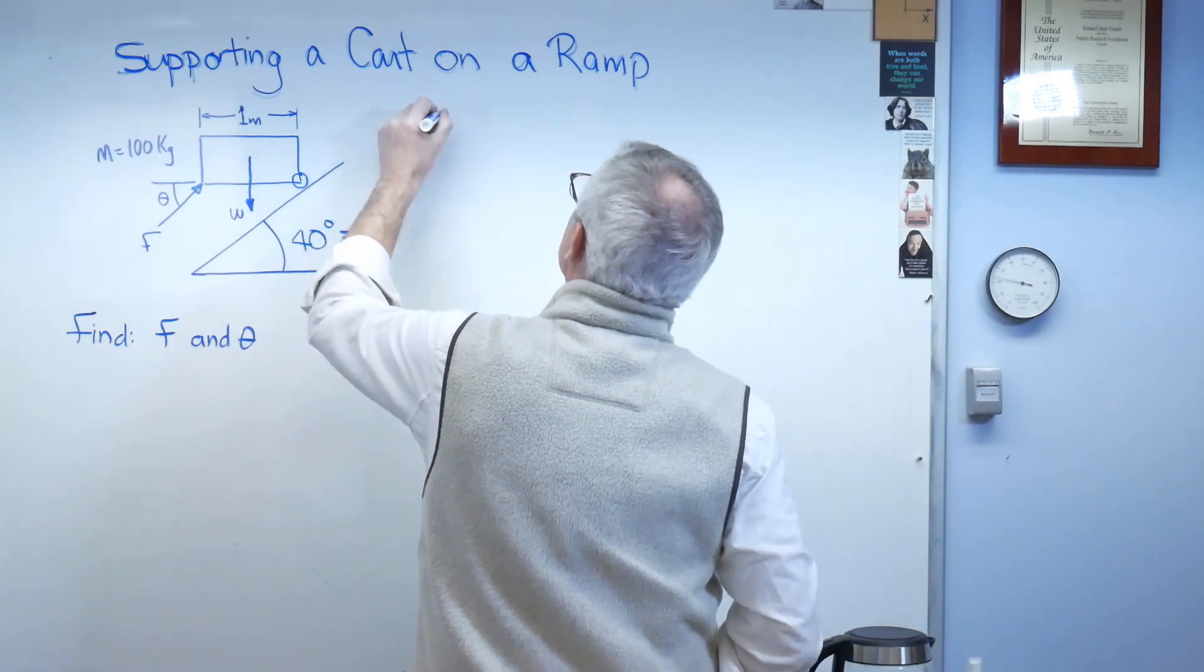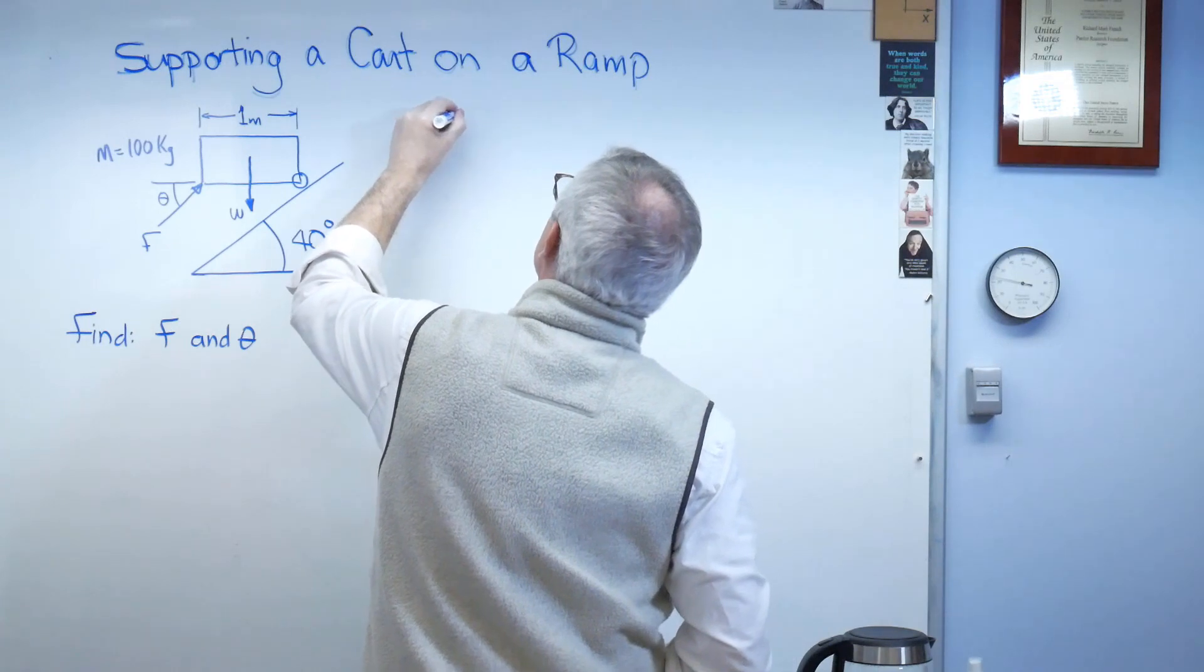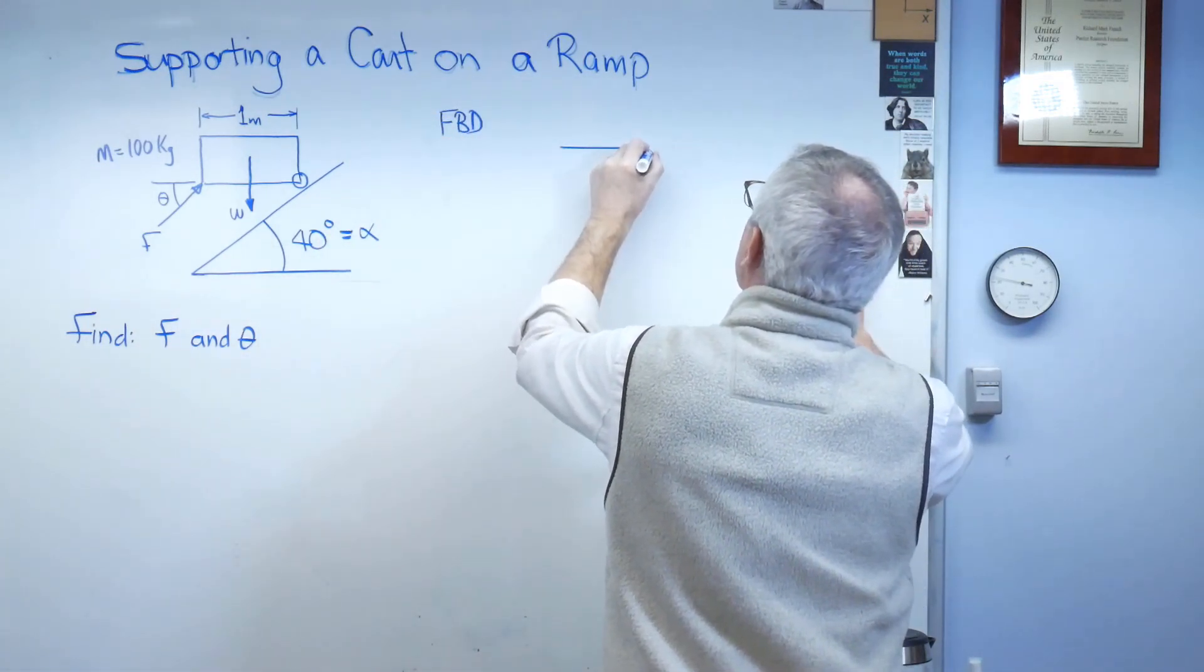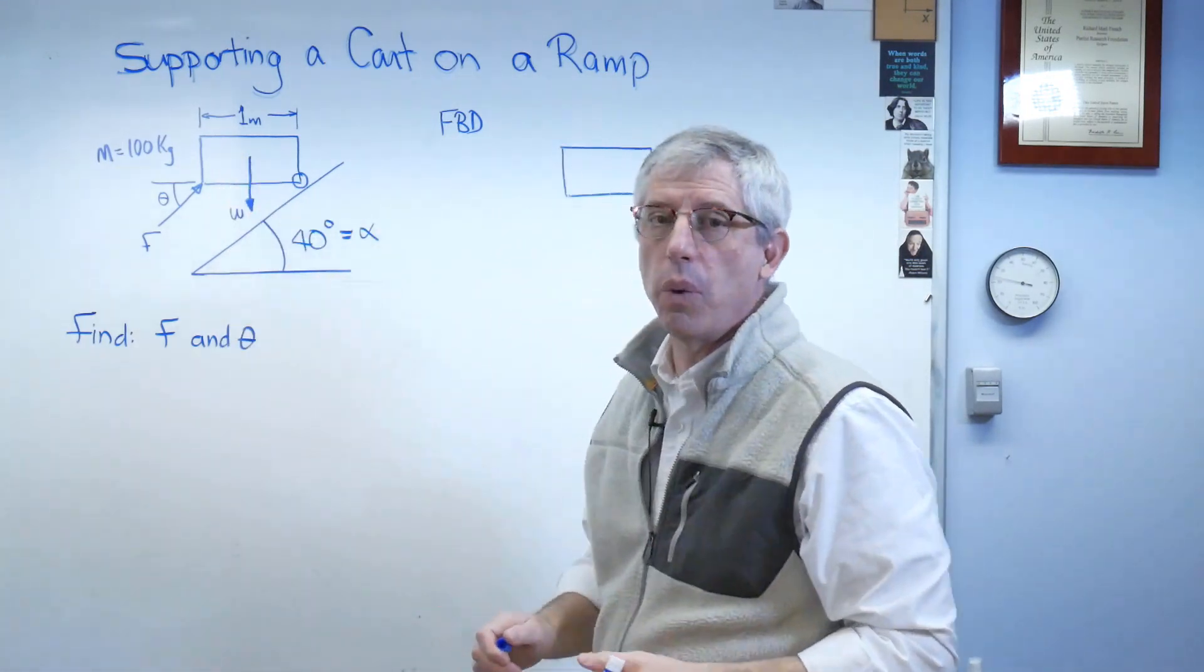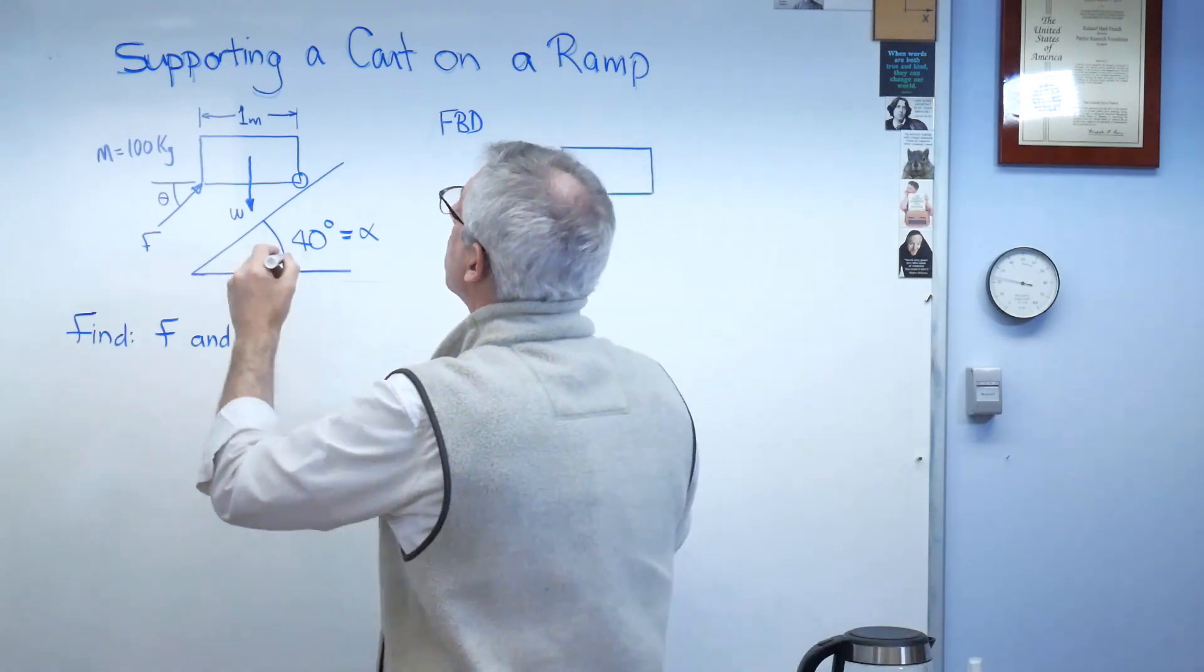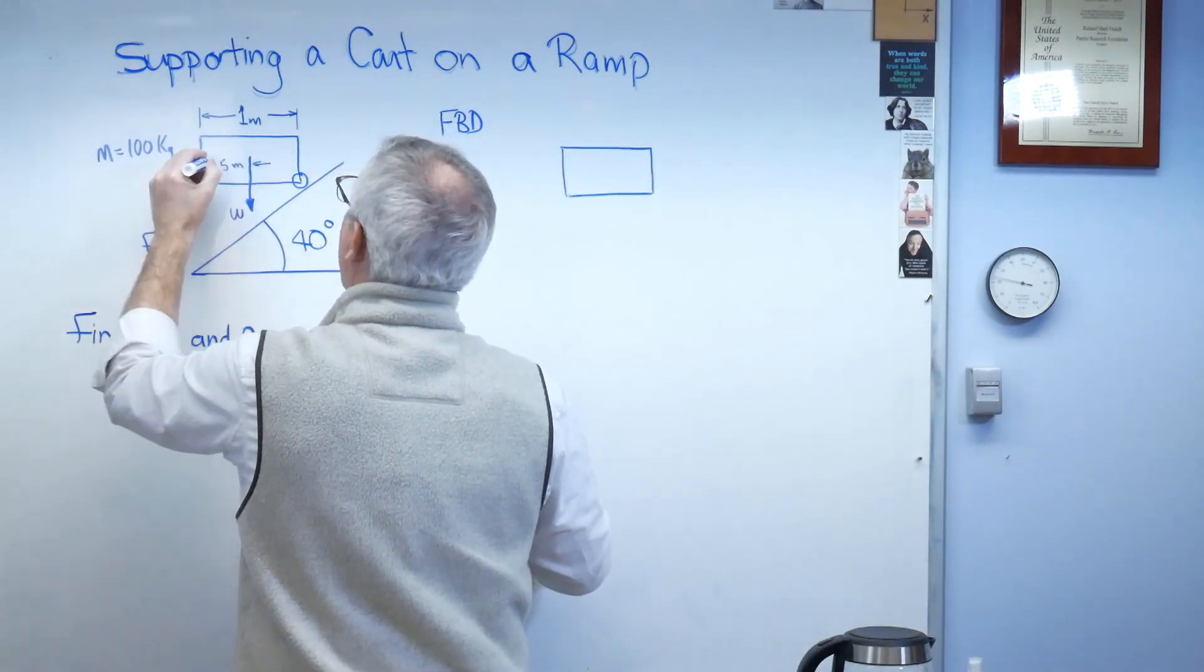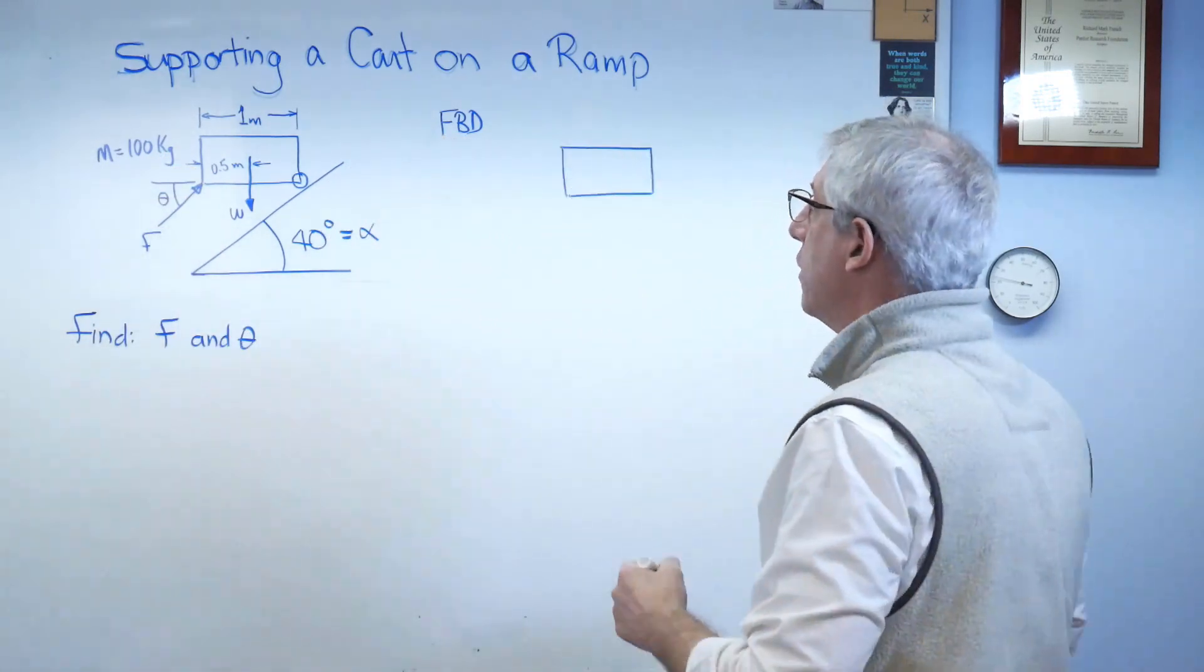So here's what it's going to look like. So this is the working diagram. Let's draw the free body diagram. Okay, so here's the cart. And by the way, I'm assuming the weight is in the middle here. This is a uniform cart, so I'm assuming that it's half a meter from either edge to the center of gravity. Center of gravity is in the middle in this case.